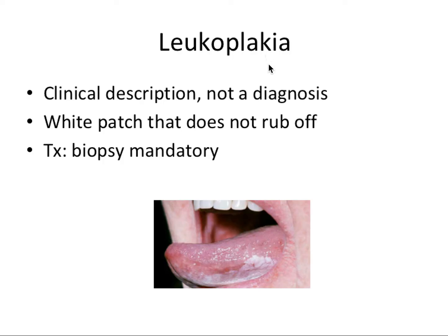The first thing we want to talk about is leukoplakia, which is a white patch. Most notably, it's a clinical description, not a diagnosis. When we see a white patch and we don't know what caused it, we call it leukoplakia, but as soon as we can identify an etiology, we call it by its diagnosis. Leukoplakia does not rub off, as compared to pseudomembranous candidiasis, which is a white patch that does wipe off. Treatment is a mandatory biopsy, because we can figure out the cause by analyzing the histology under the microscope.